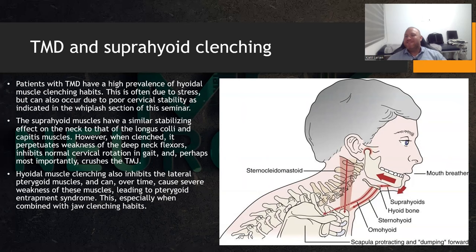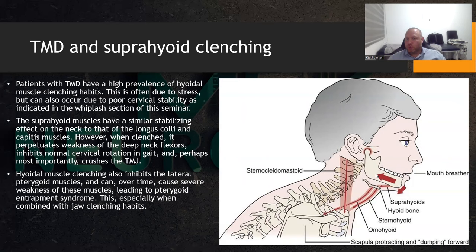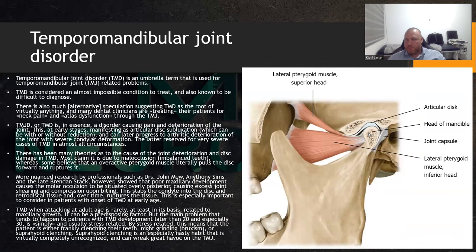This is why so many patients also get TMD after whiplash — because they start clenching these muscles. As you can see on the illustration, the suprahyoid attaches to the chin, to the hyoid, to the sternum. When you clench those, it pulls the jaw back. And when you pull that jaw back, you directly increase joint shearing, compressing the disc and the nerve in the back.